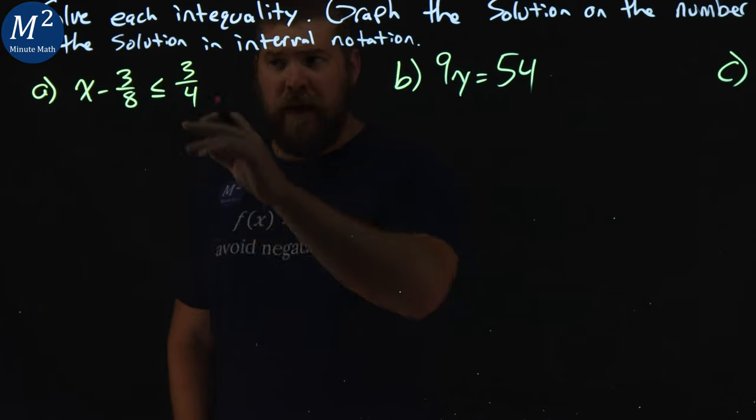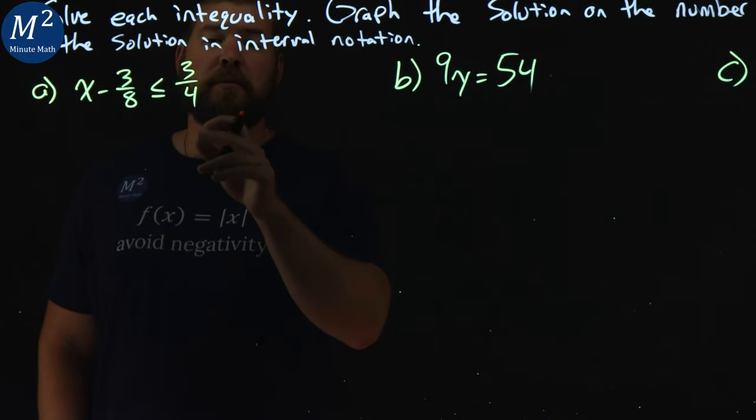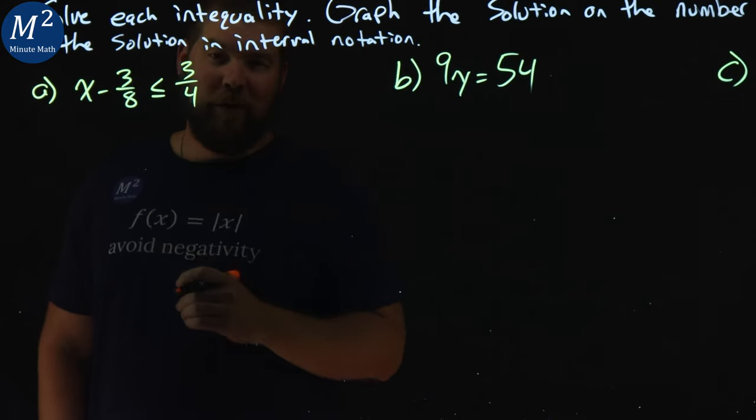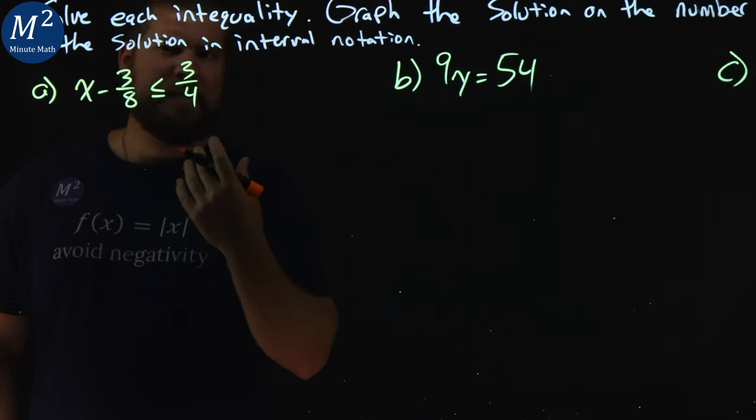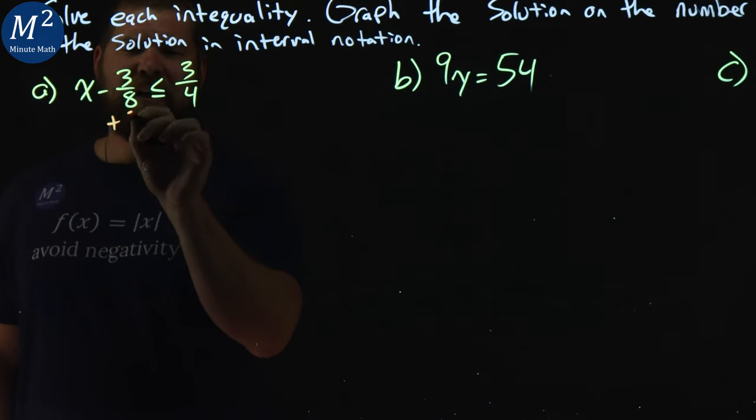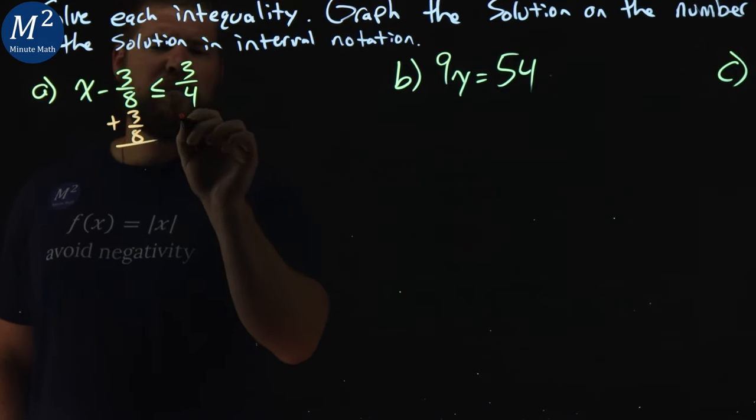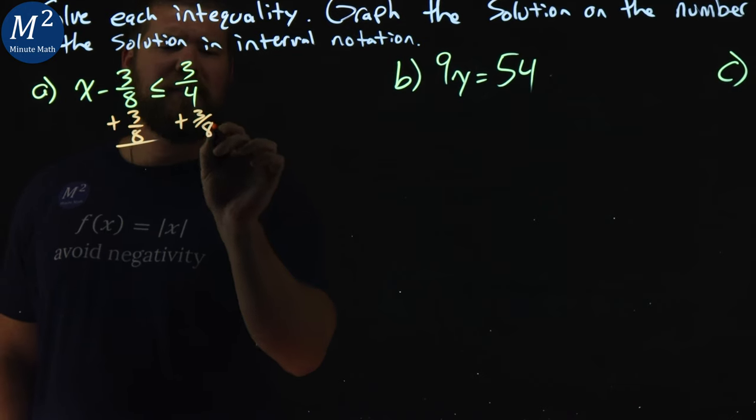Let's start with our first one, x minus 3 eighths is less than or equal to 3 fourths. I want to get x by itself, so to do that I have to add 3 eighths to both sides. Not too bad, we treat it just like an equal sign.